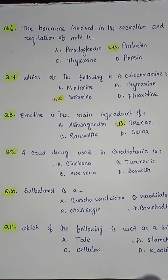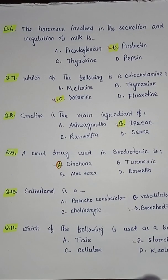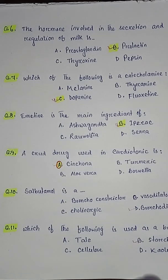Question number ten: salbutamol is — option A bronchoconstrictor, option B bronchodilator, option C cholinergic, option D bronchodilator. So the correct answer is option D bronchodilator.